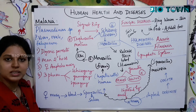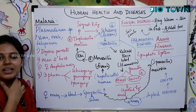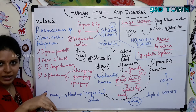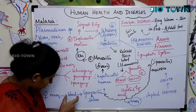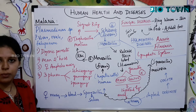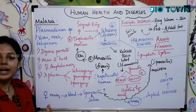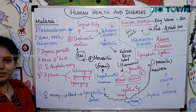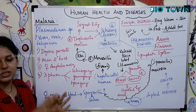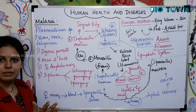A female Anopheles mosquito feeds on humans. The Plasmodium present in the salivary glands of the female Anopheles mosquito starts regurgitating into the blood. In the blood you have the sporozoite stage. The female Anopheles mosquito liberates the sporozoite stage into the bloodstream of humans.